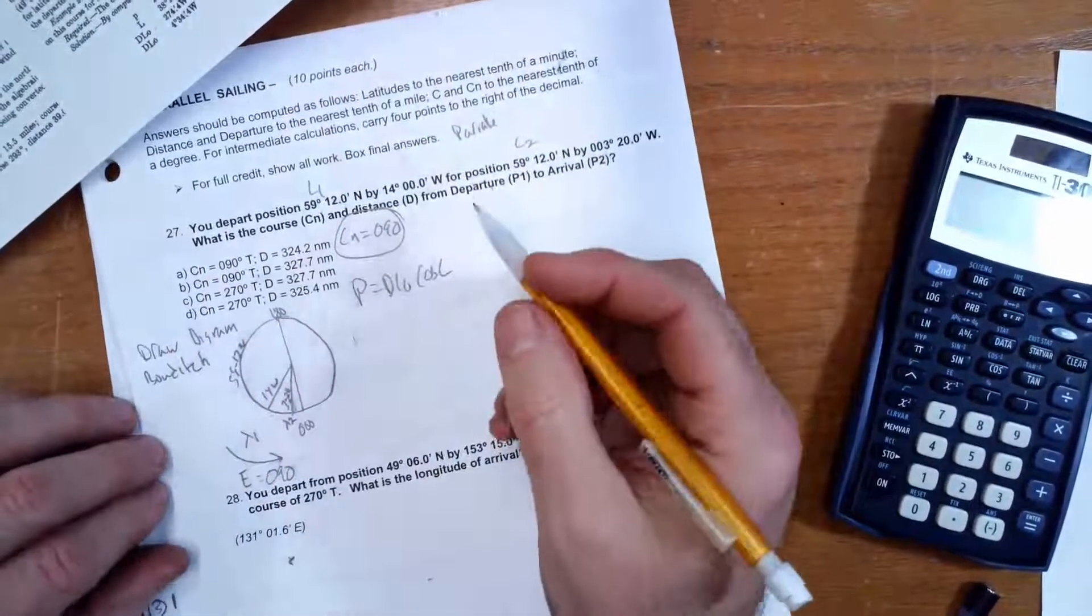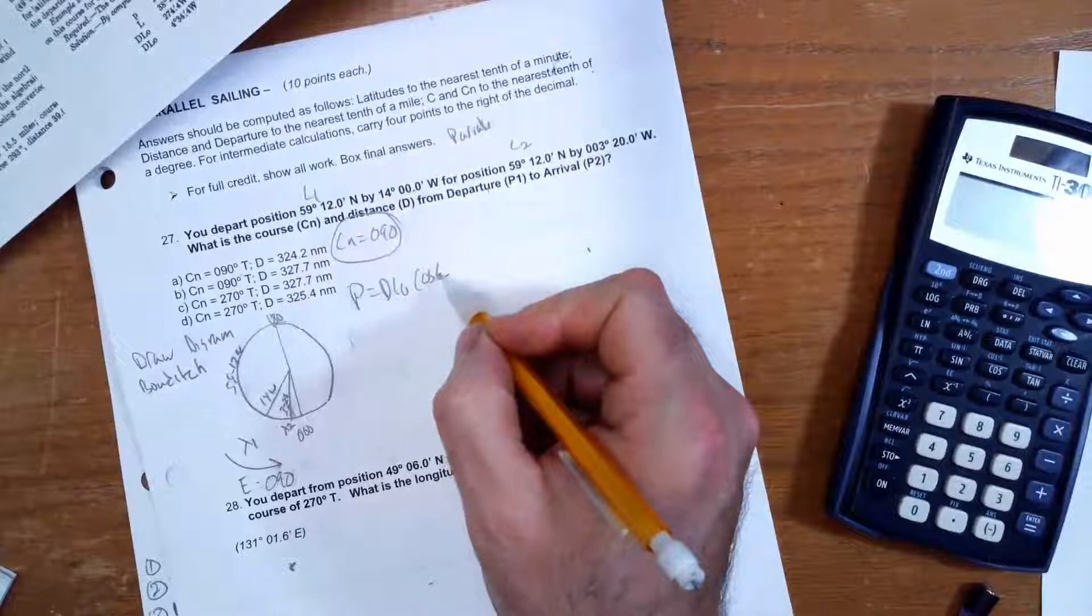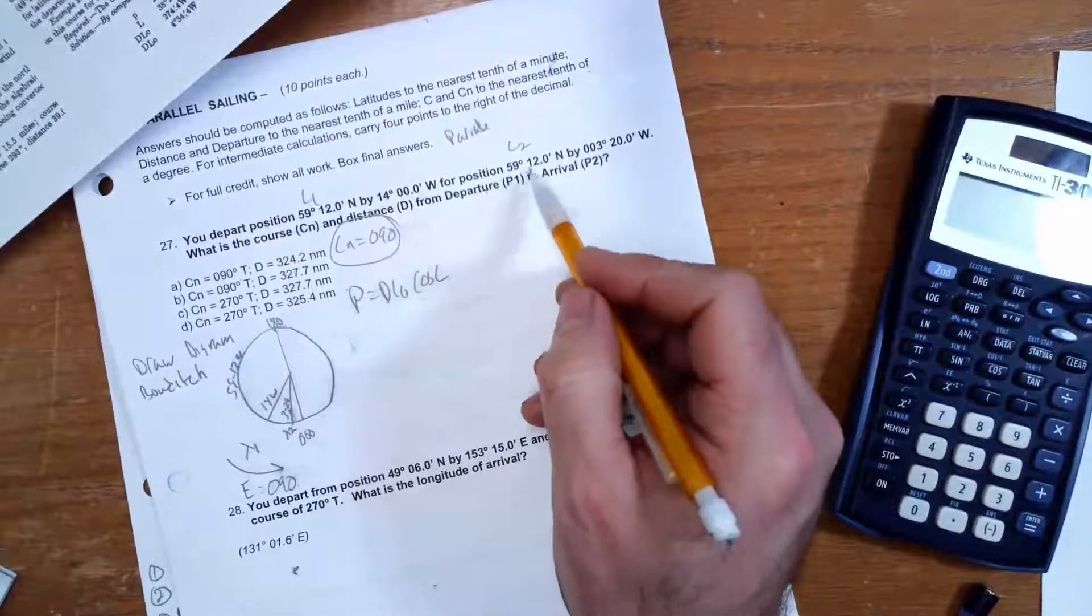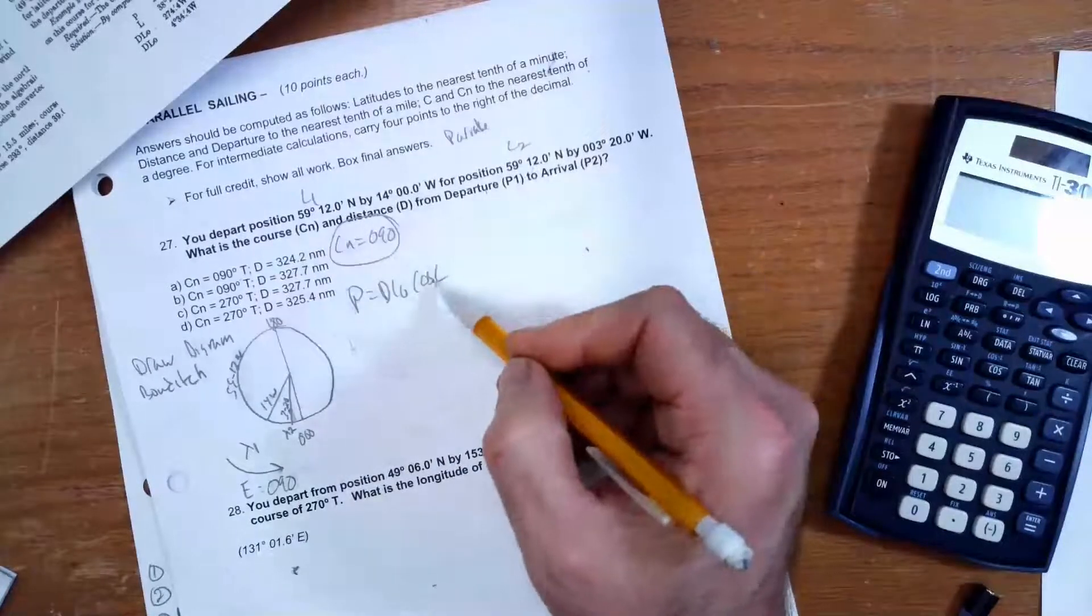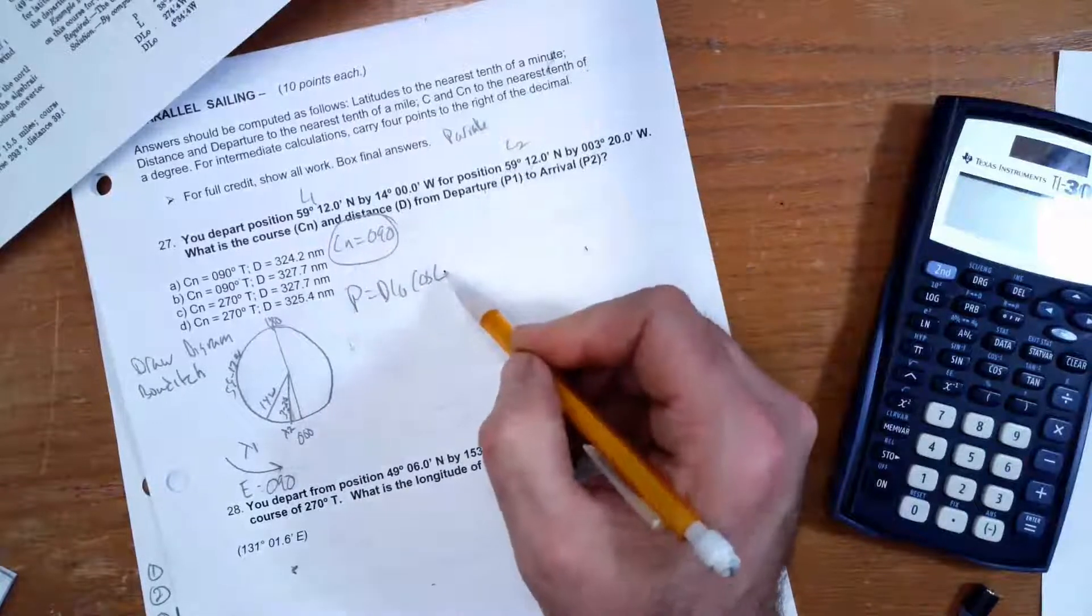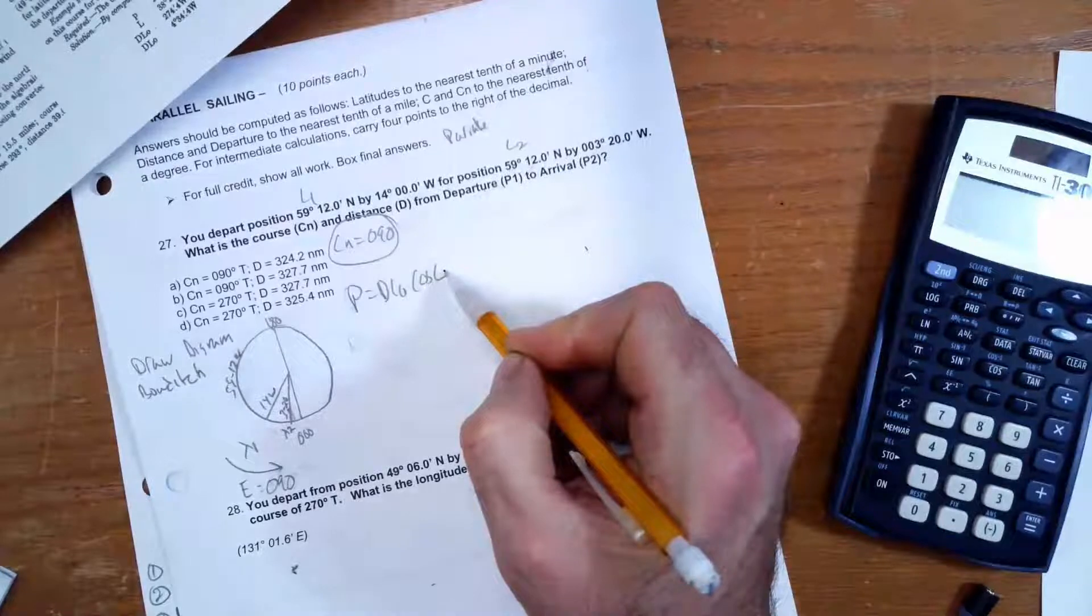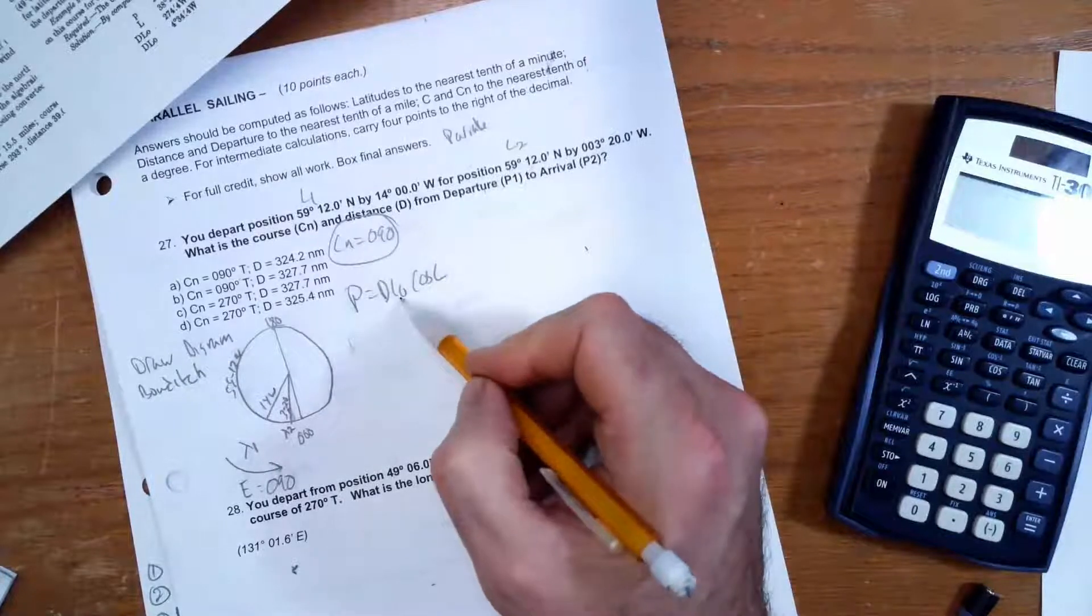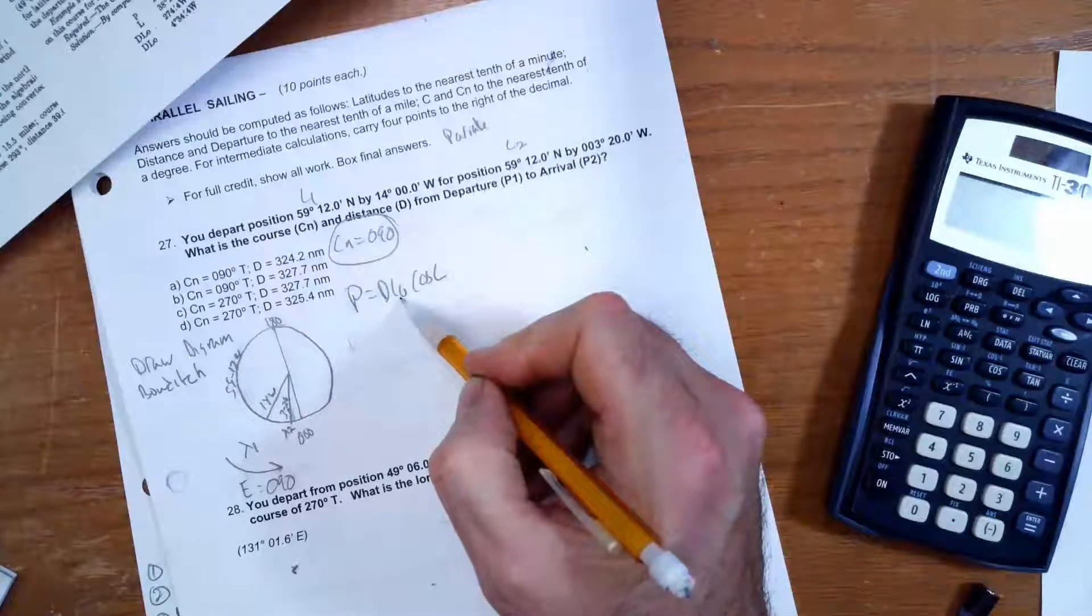So P equals DLo times cosine L. Now, we're going to need to take our latitude, which is 59°12', and convert that, because whenever you do a trig function, you've got to be in decimal degrees. So we're going to have to take 59°12' and convert that to decimal degrees. We're going to do that in a minute, and then DLo. So what's DLo?